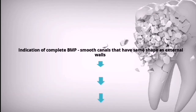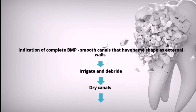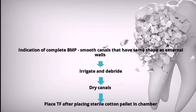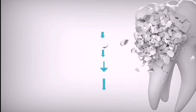The indication of complete BMP is when you have smooth canals that have the same shape as the external walls. Then irrigate and debride the canals, dry them well, place a sterile cotton pellet in the chamber, and place a temporary filling before dismissing the patient again.